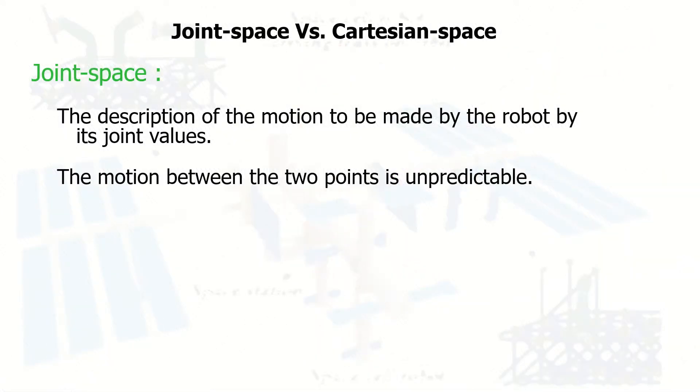The joint space is focused on the sum of the joints of the robots. In the description of the motion, it's more on the joint value itself. For this case, it may be difficult for us to get the exact point-to-point end effector motions.